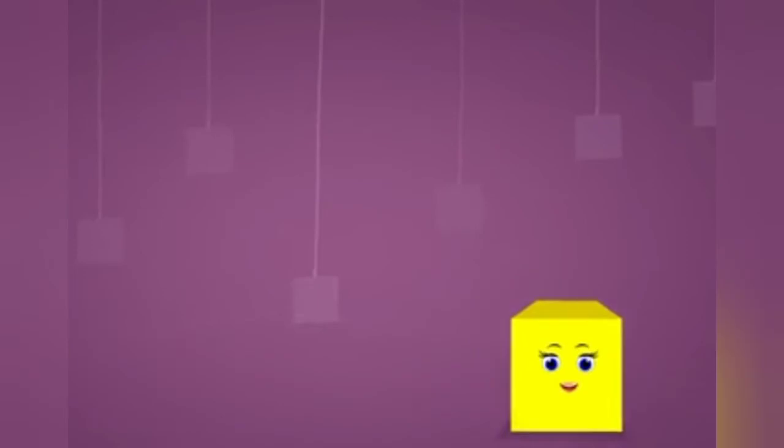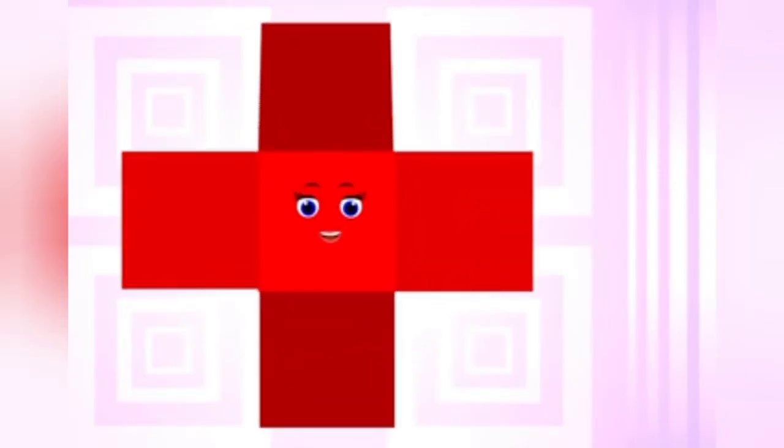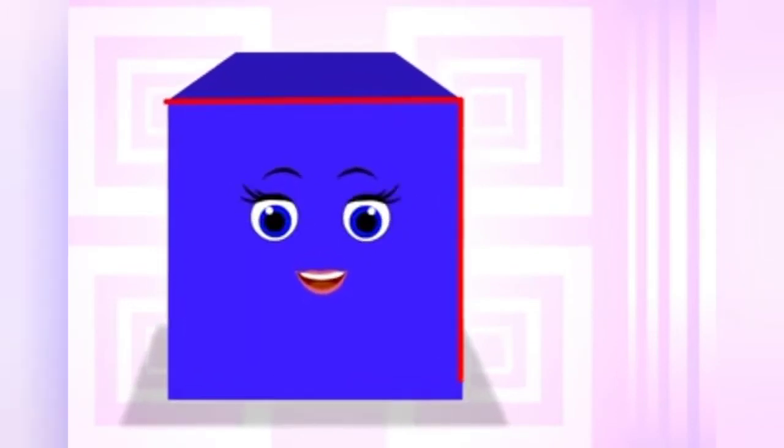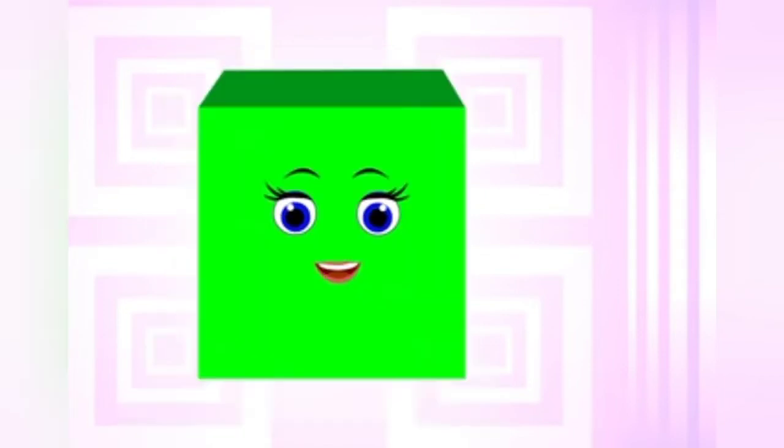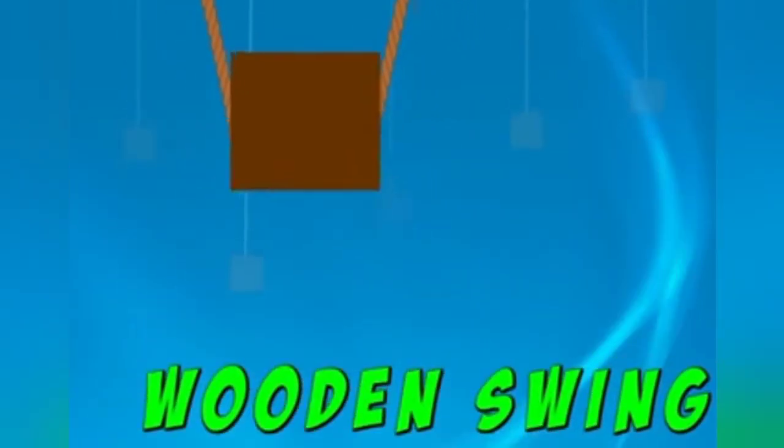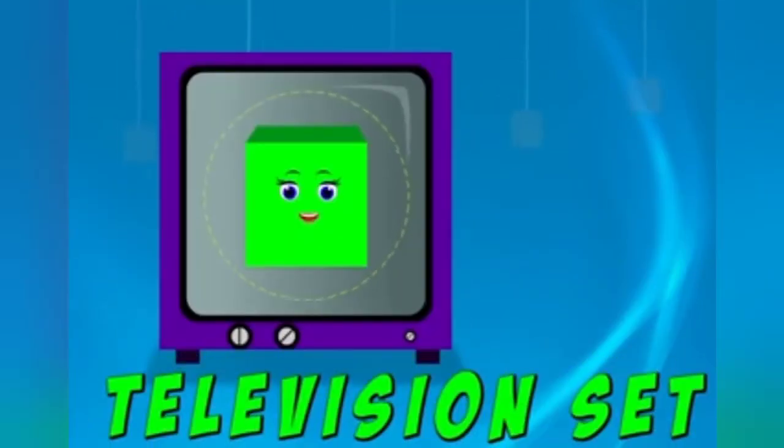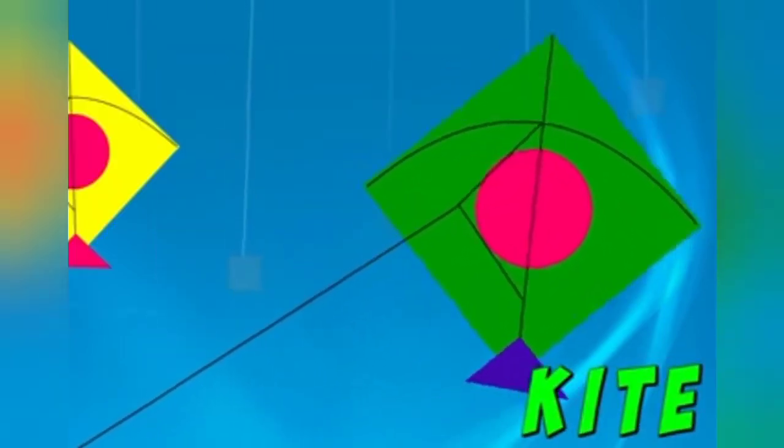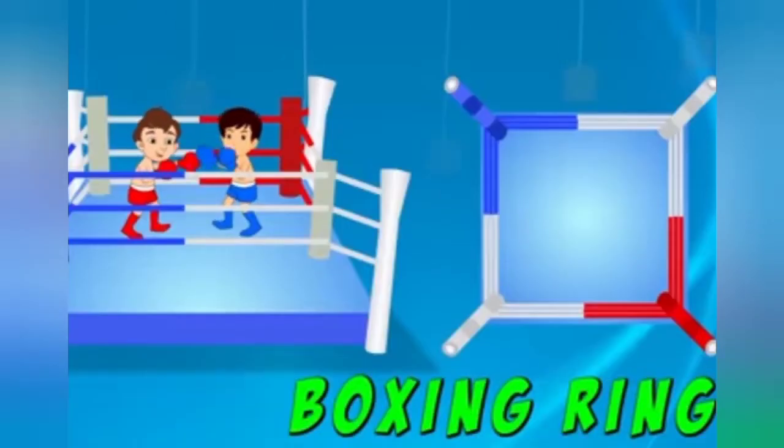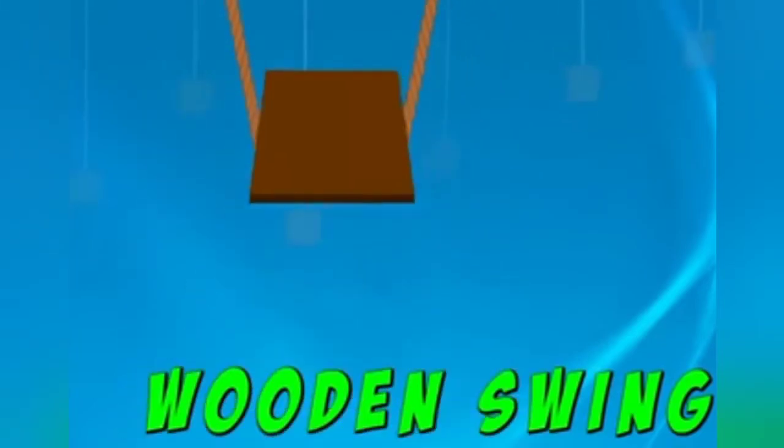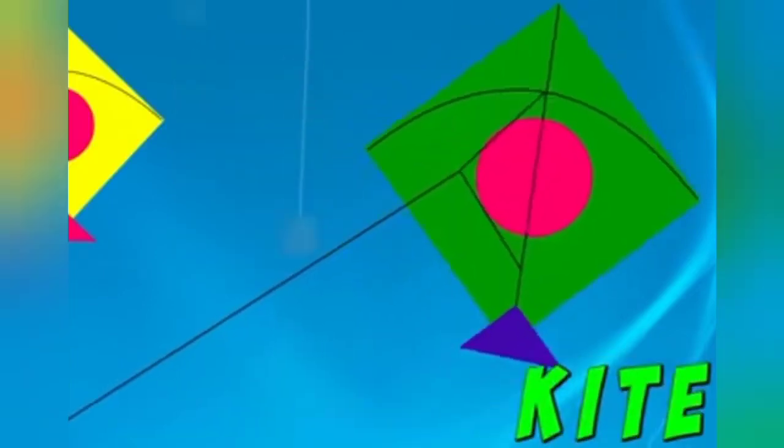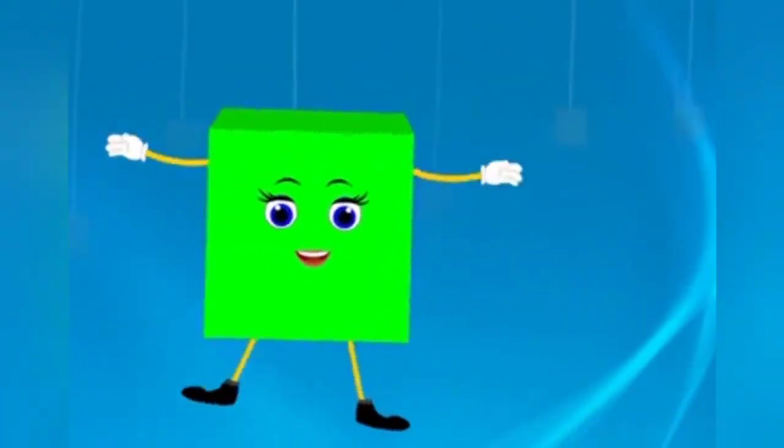So again children, a square has four sides and four corners. How many sides? Four sides, four equal sides and four corners. Now again, the boxing ring, the wooden swing, the television set, and the kite are all square in shape.